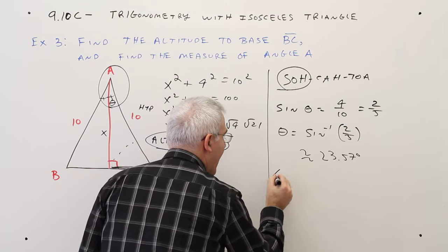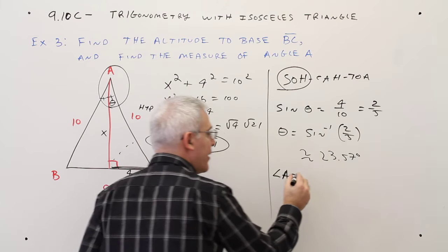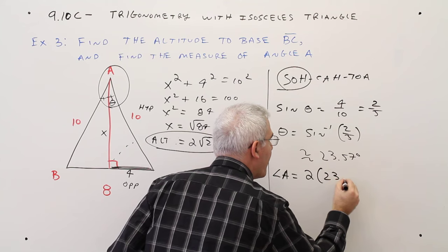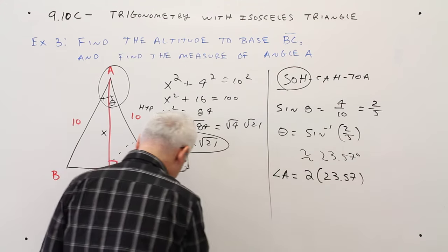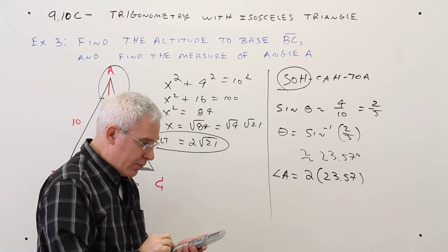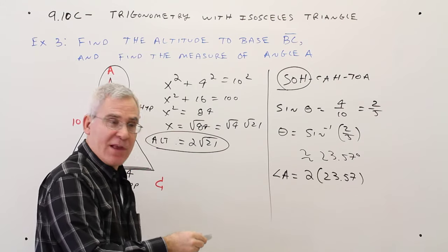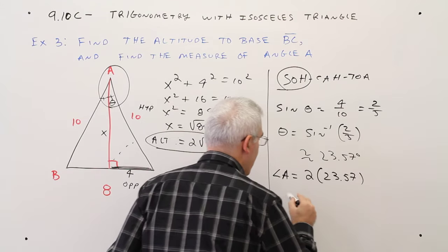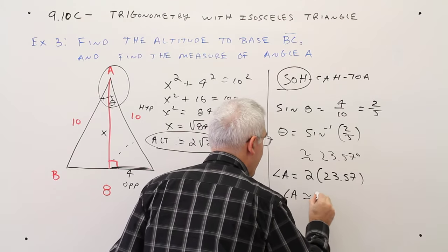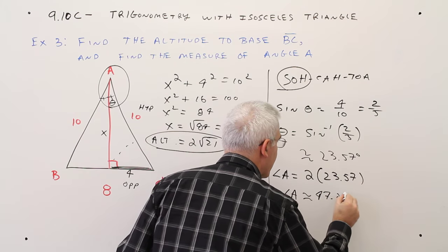And then angle A is going to be 2 times 23.57. Let's multiply that by 2 and get about 47.2. So angle A is about 47.2 degrees.